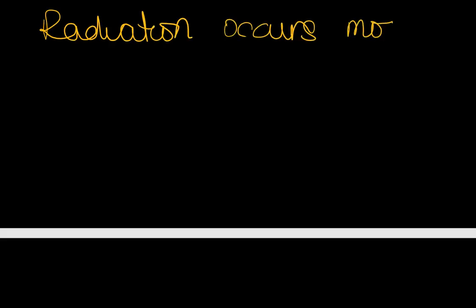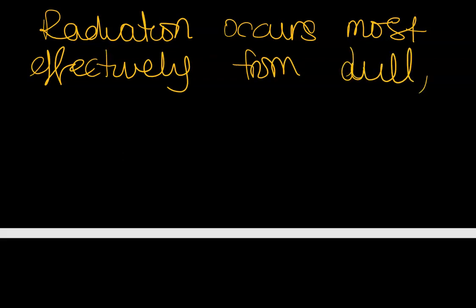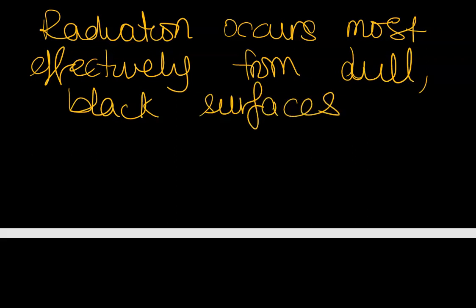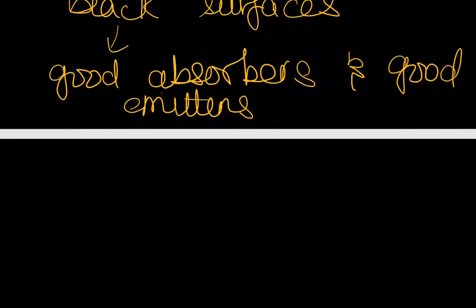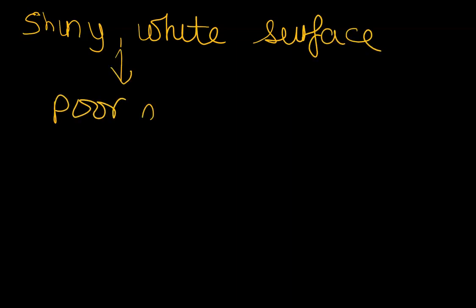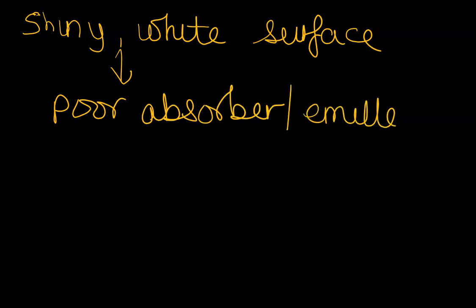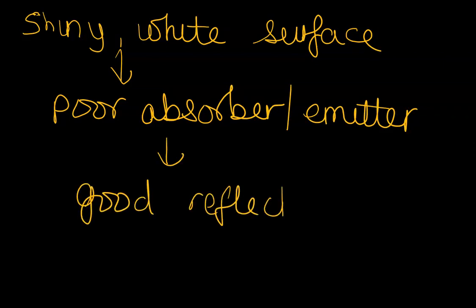When we look at radiation, one of the main things we look at is the nature of a surface. Radiation occurs most frequently and effectively from dull black surfaces. You will find that these dull black surfaces are always good absorbers and good emitters. That being said, if you have a shiny white surface, then that is a poor absorber and hence poor emitter, but it is a good reflector of that heat energy.